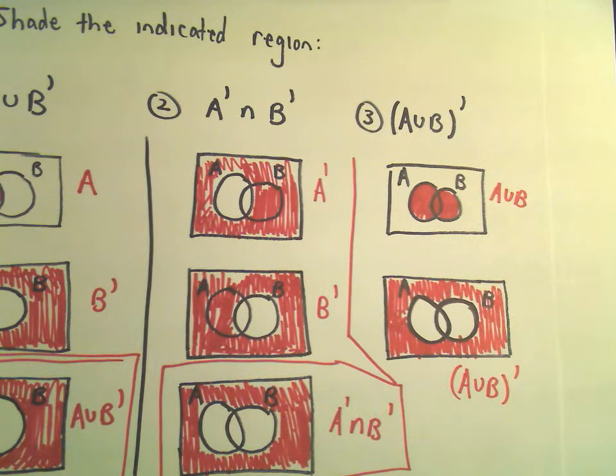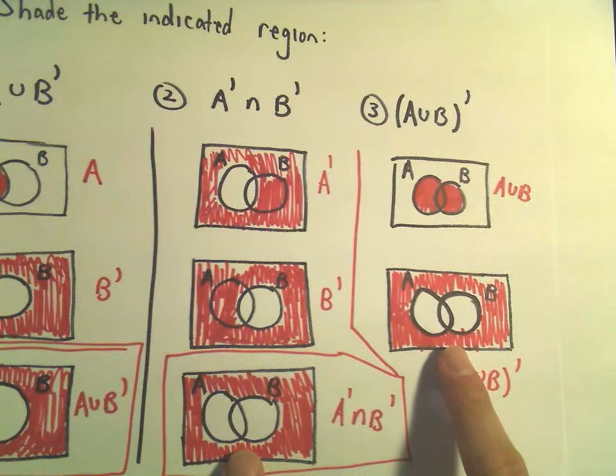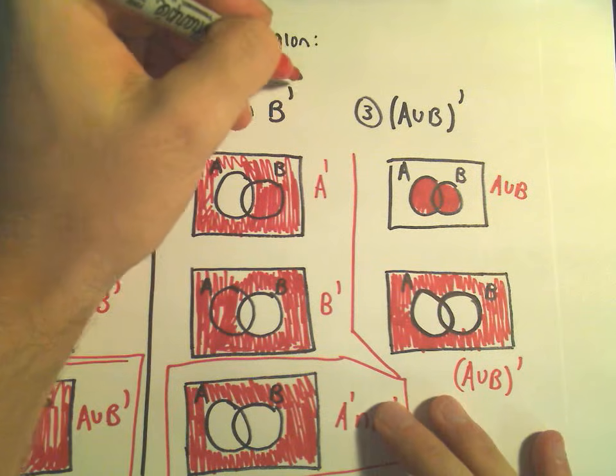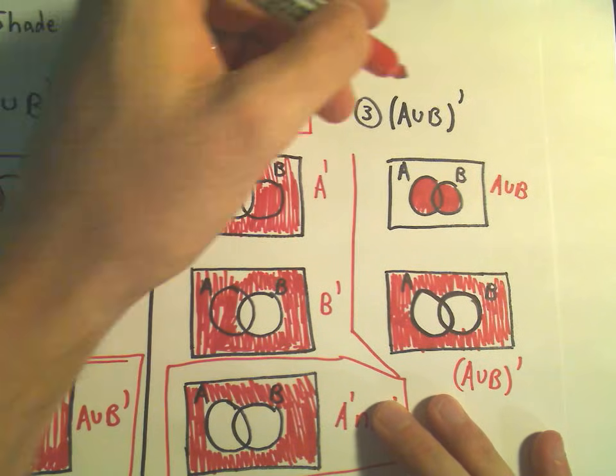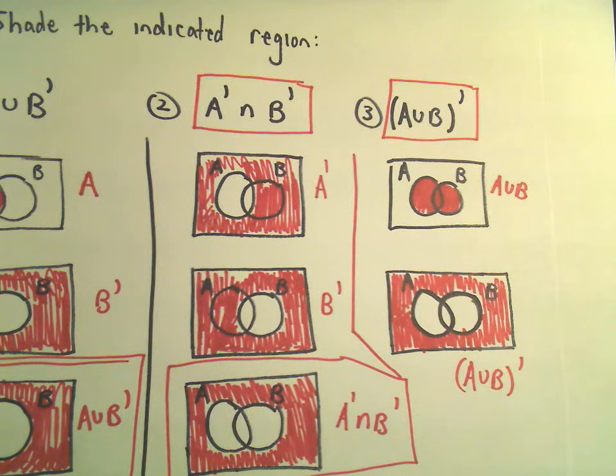And notice one little thing here that's interesting. Notice we've ended up shading the exact same two regions, right? It turns out that NOT A and NOT B is equivalent to NOT A or B. And this is something that ties into what's known as DeMorgan's Law.